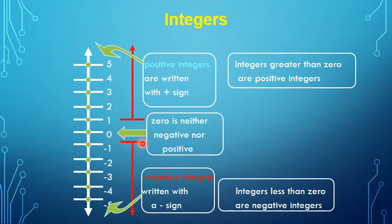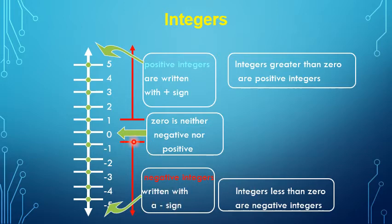The integers below zero are negative integers. They are written with a negative sign. These integers below zero are less than zero, and they are negative integers.